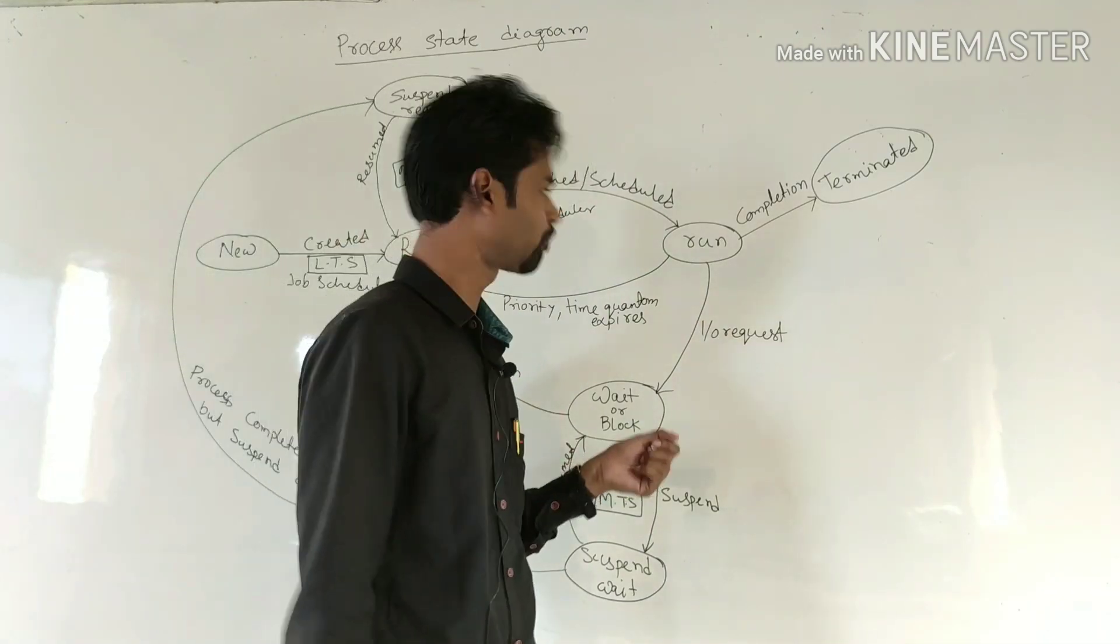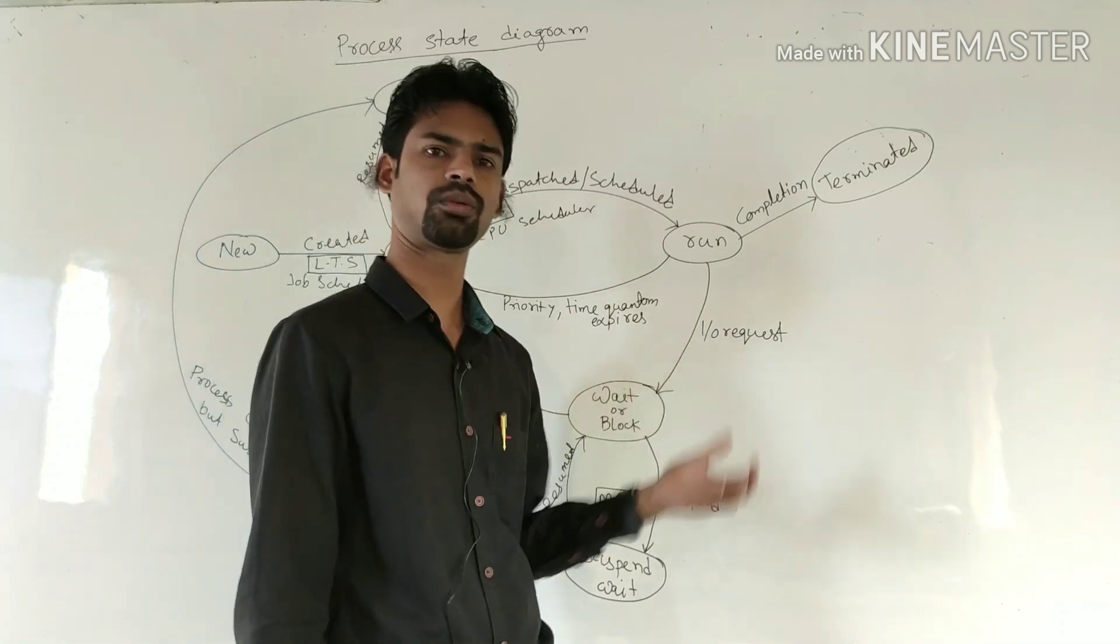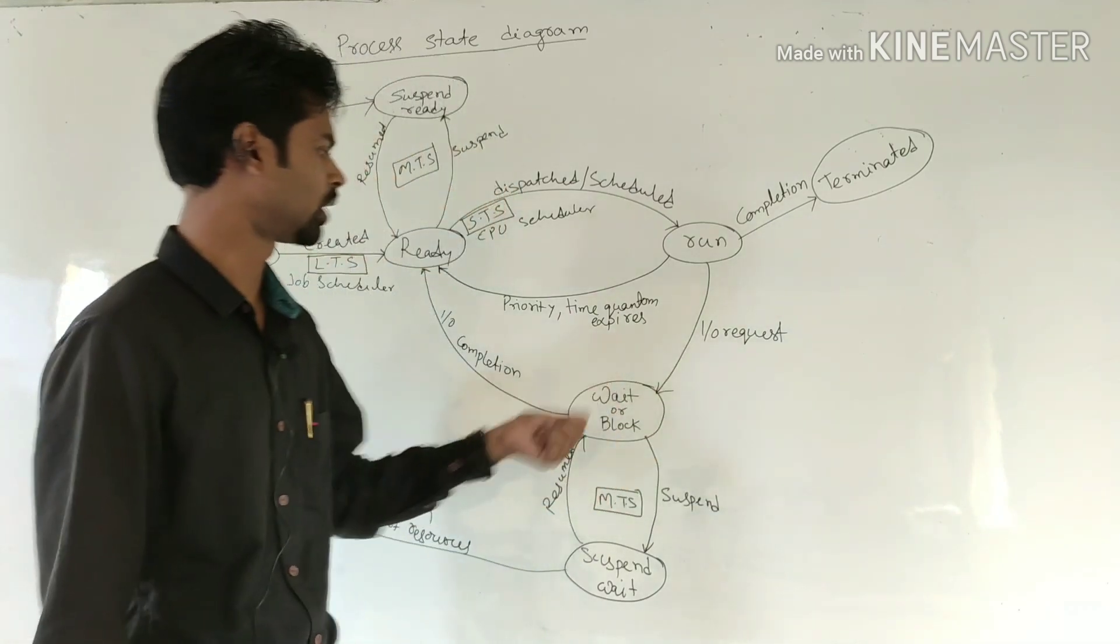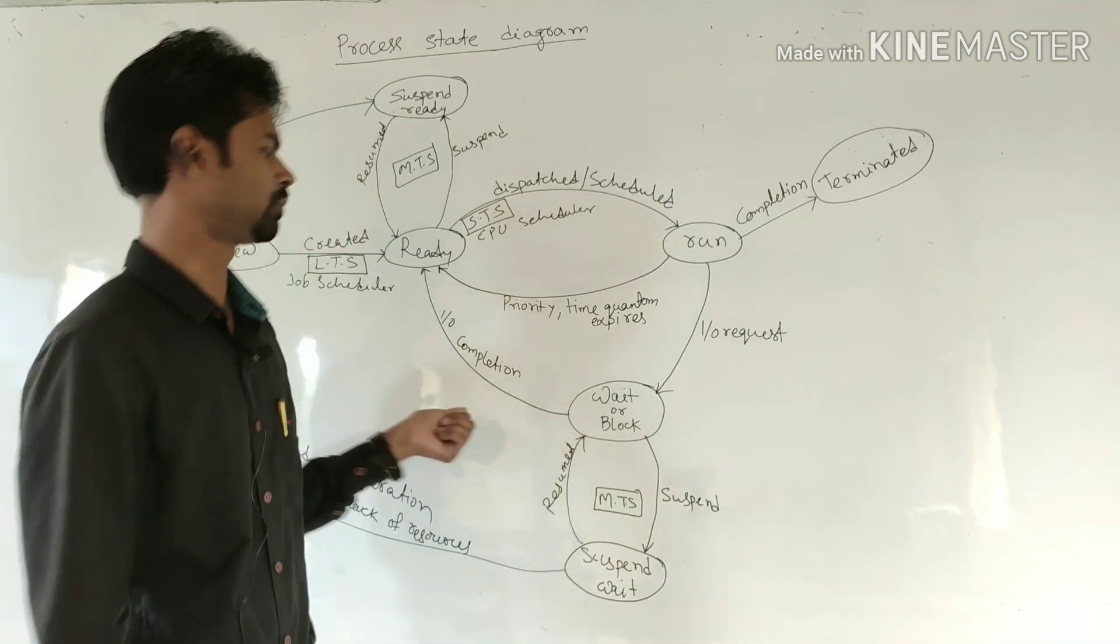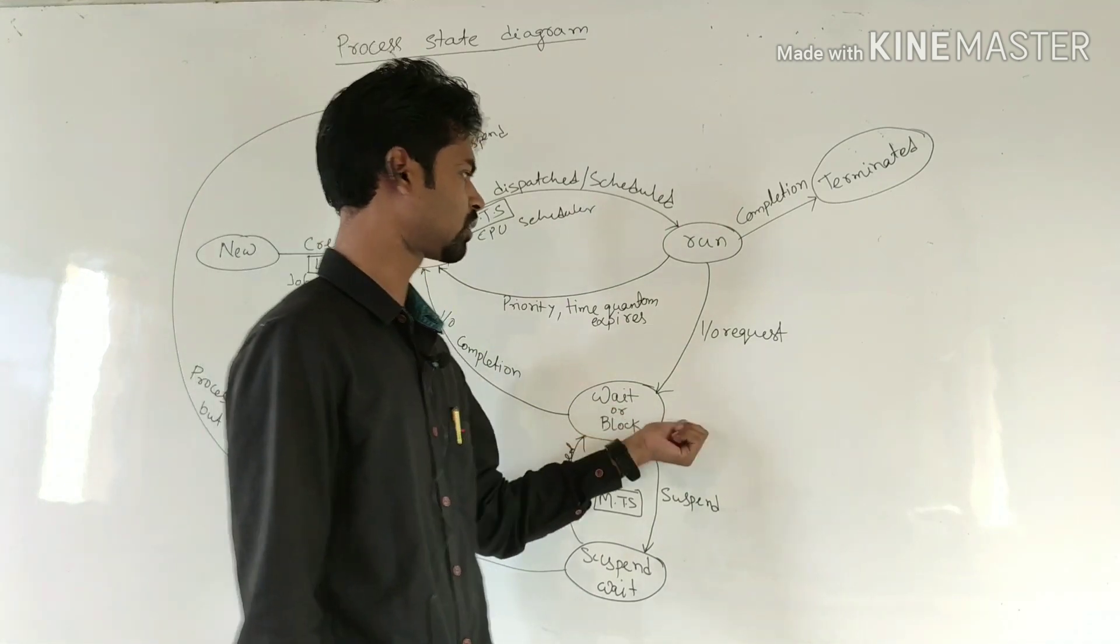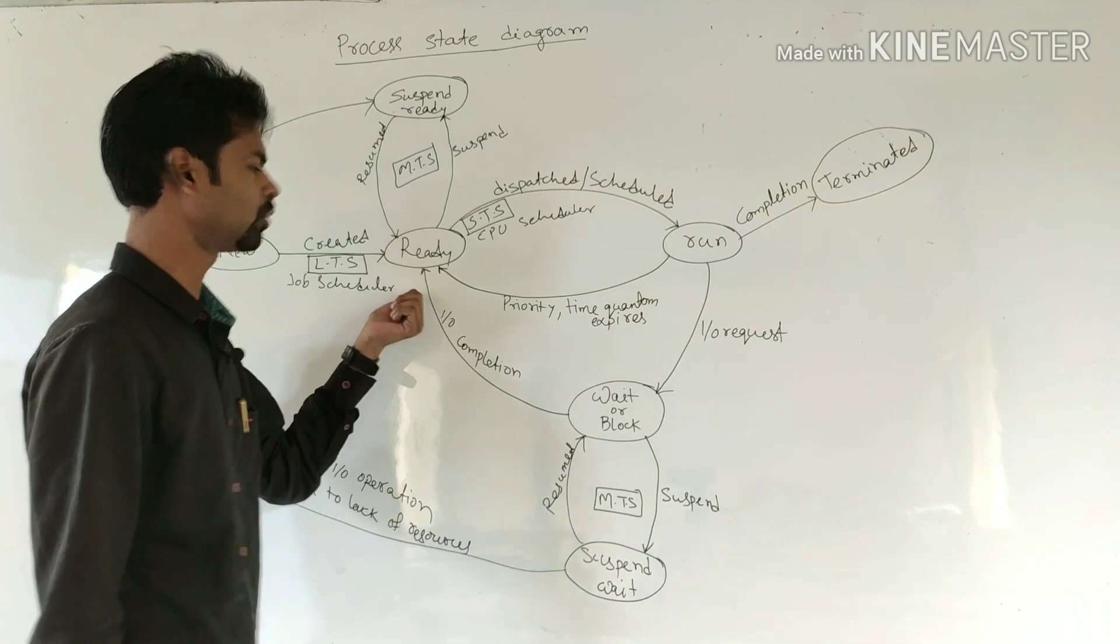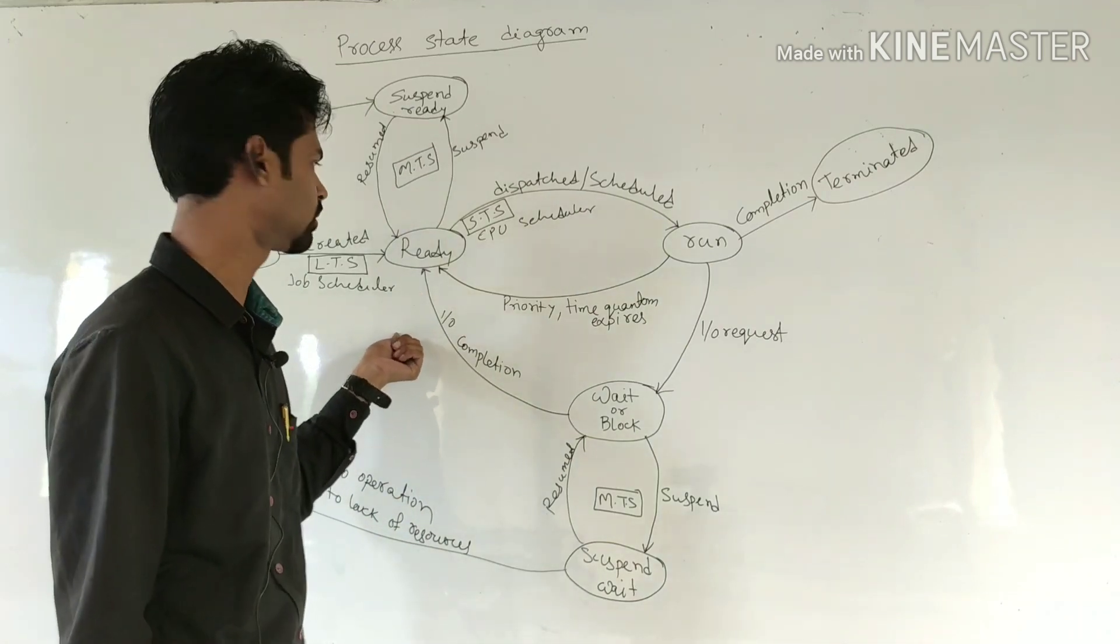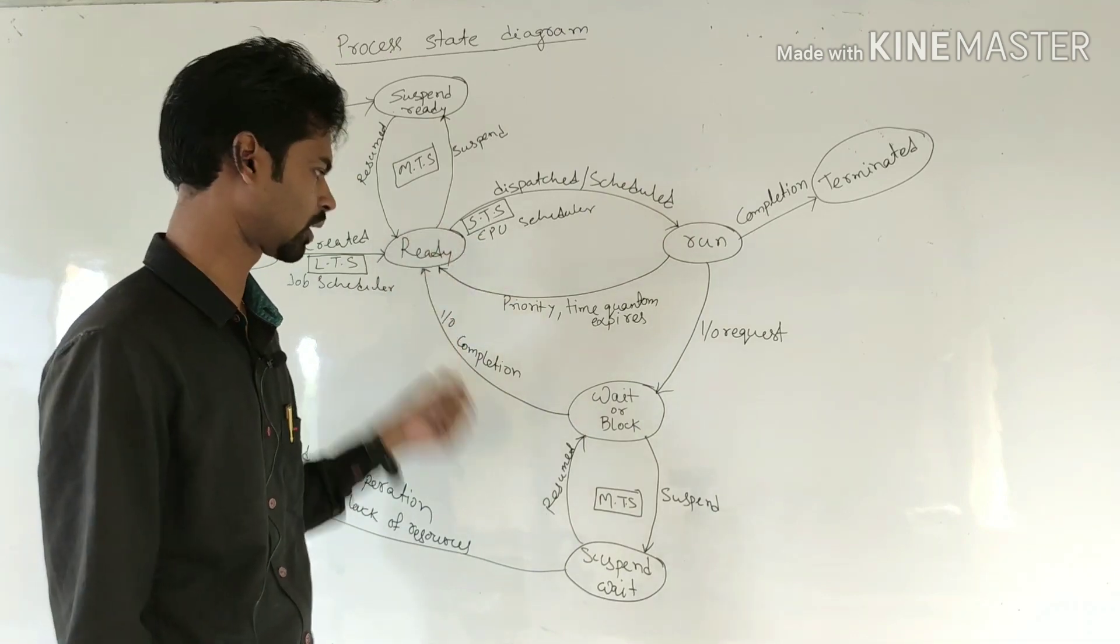In running state, if a process requires any I/O operation, then that process will move to wait or block state. After getting the response to I/O request, it will move to ready state again and be scheduled by short-term scheduler.